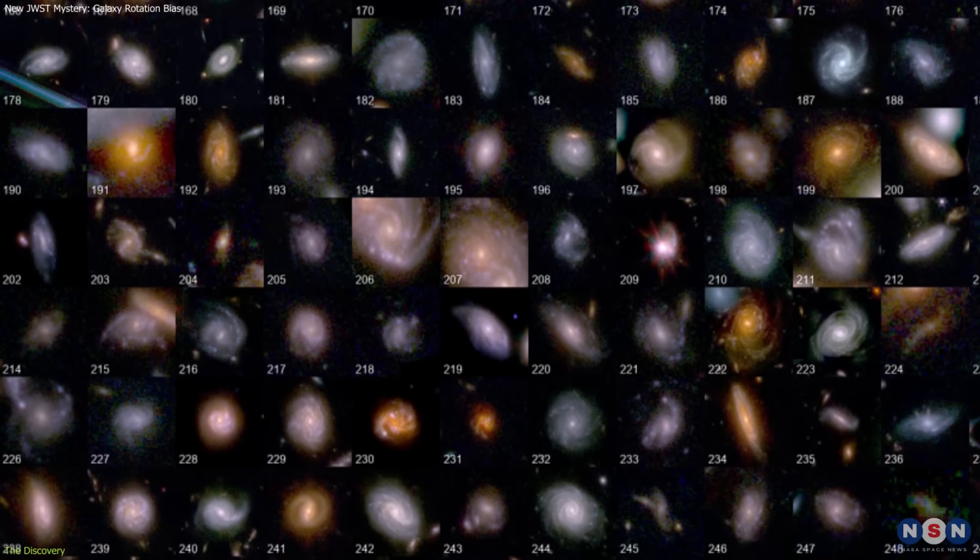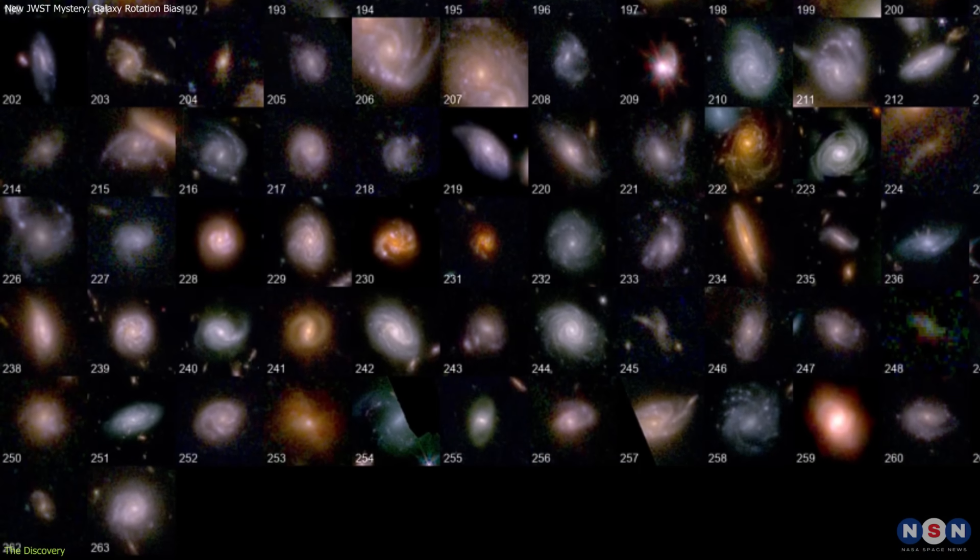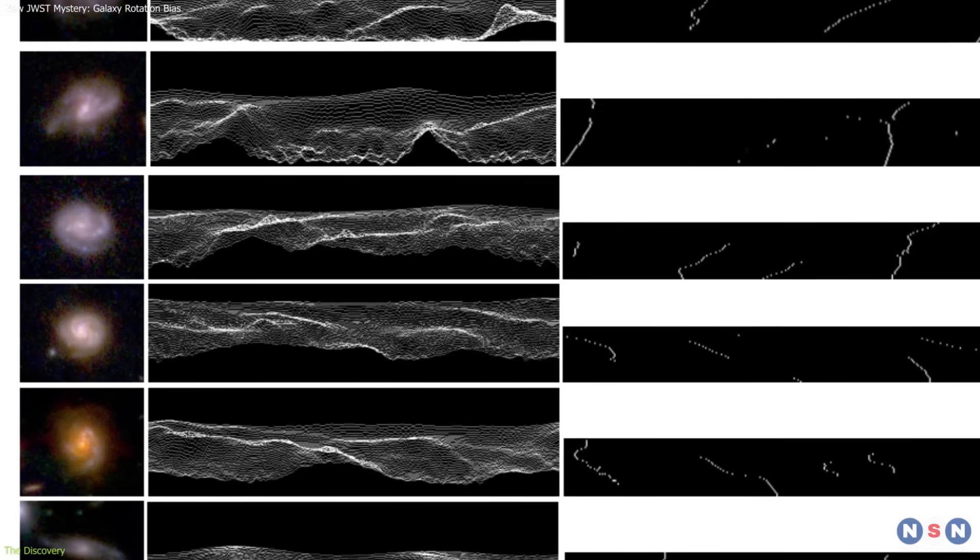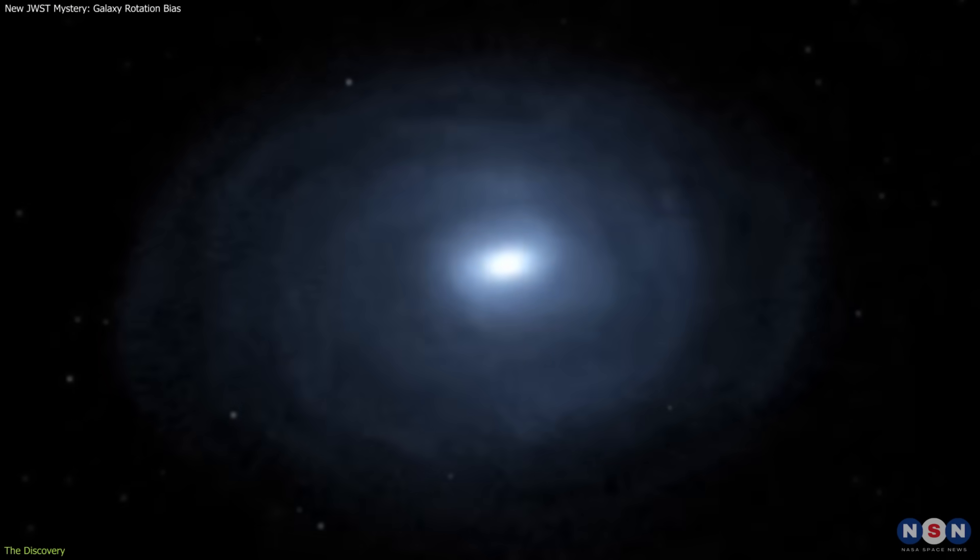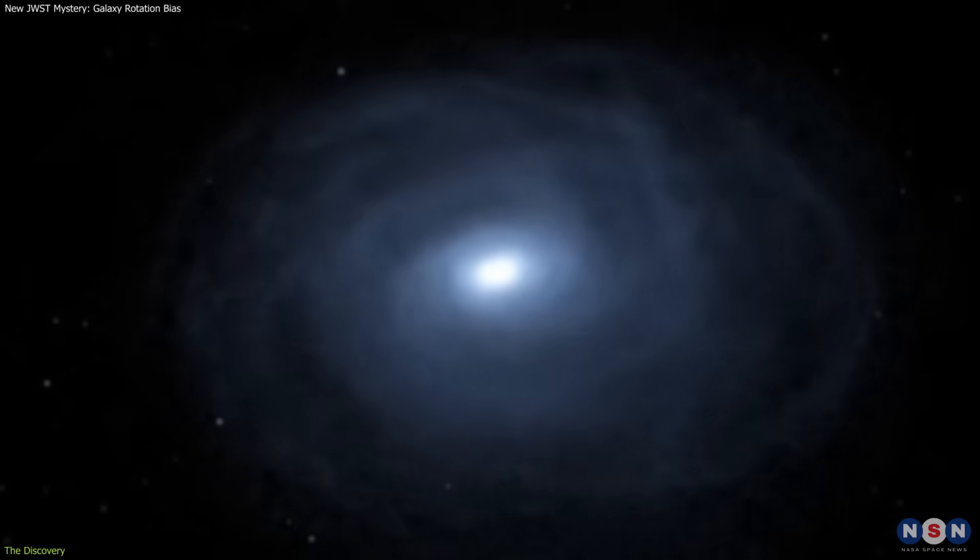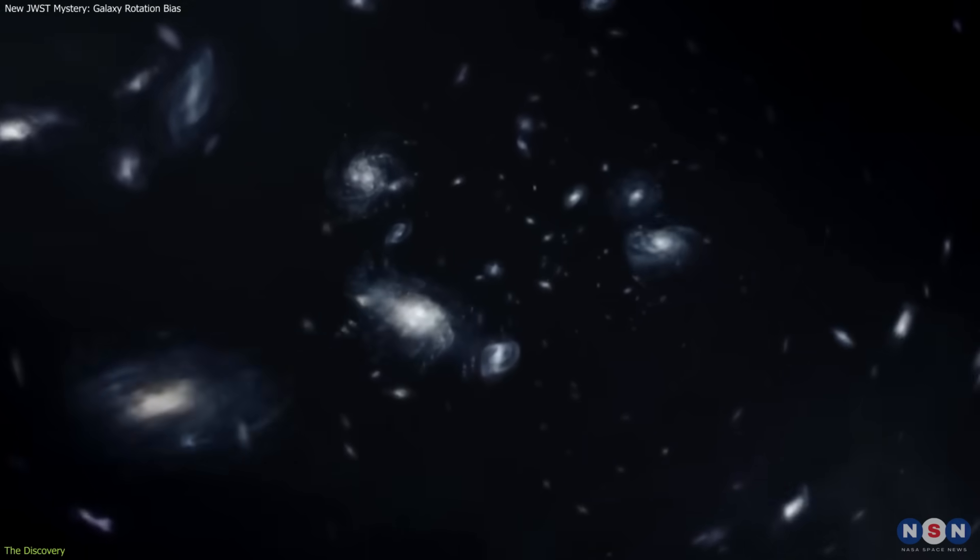But the results were clear. Out of 263 galaxies, 158 appeared to rotate clockwise, while 105 rotated counterclockwise relative to the Milky Way. The imbalance was not subtle.